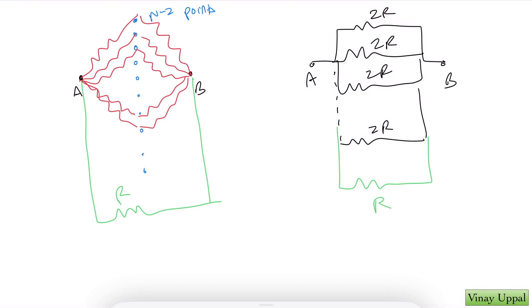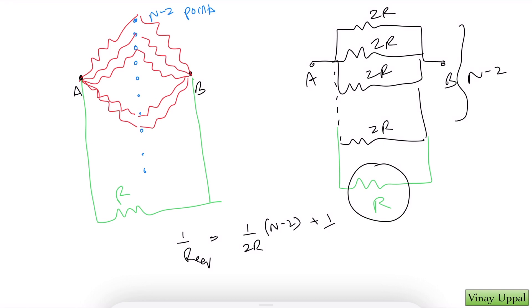So now it is very straightforward — you just have to add up all of them in parallel. I can simply write: 1 over R_equivalent equals 1 over 2R plus 1 over 2R plus 1 over 2R, which is n minus 2 times, plus 1 over R, which is the resistance connecting A and B directly. So, you get R_equivalent equals 2R over n.